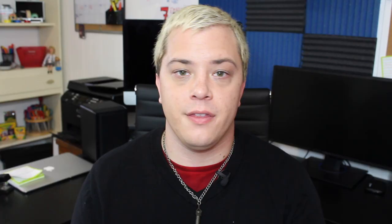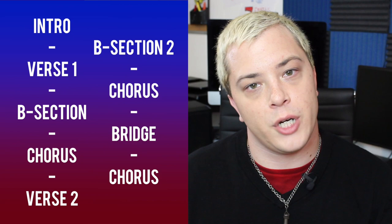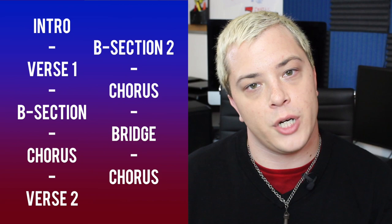Now that we know the parts of a song, let's talk actual song structures. The most common format on the radio is intro, verse, B section, chorus. The full format is typically: intro, verse one, B section, chorus, verse two, B section two, chorus, bridge, chorus again — and sometimes an outro, depending on the song.